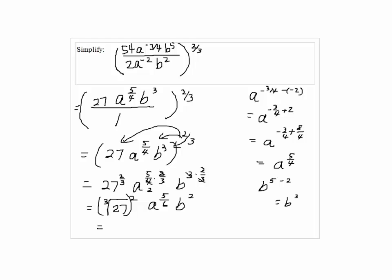27 cube root of 27 is 3. So, 3 squared is 9. So, the answer is 9a^(5/6)b^2.